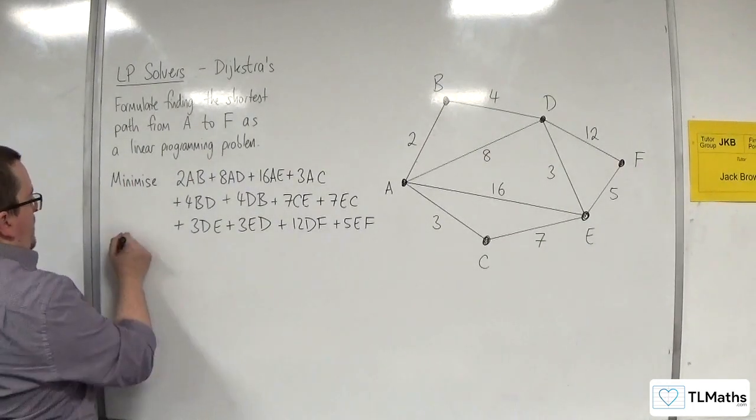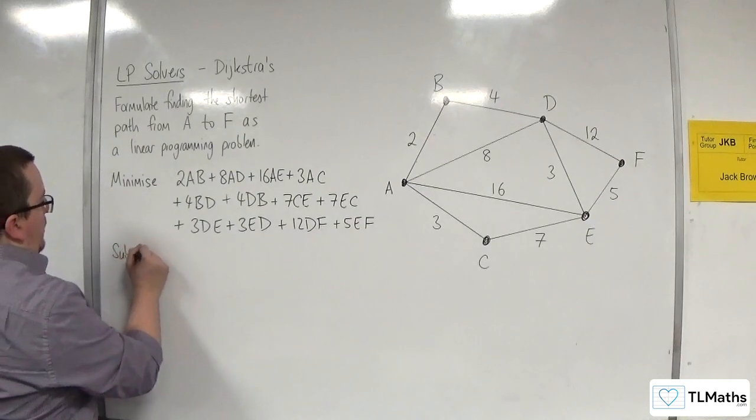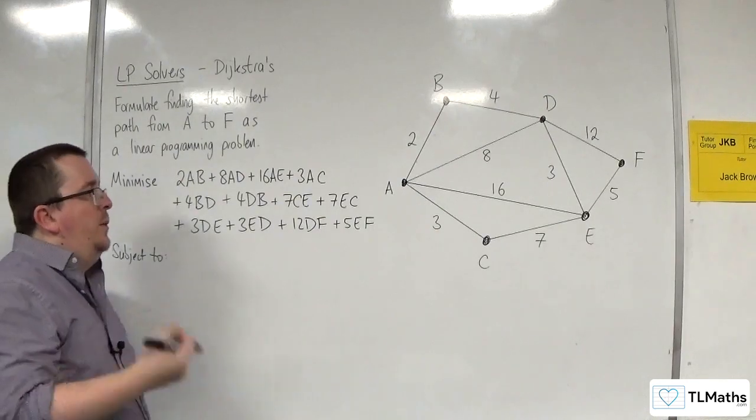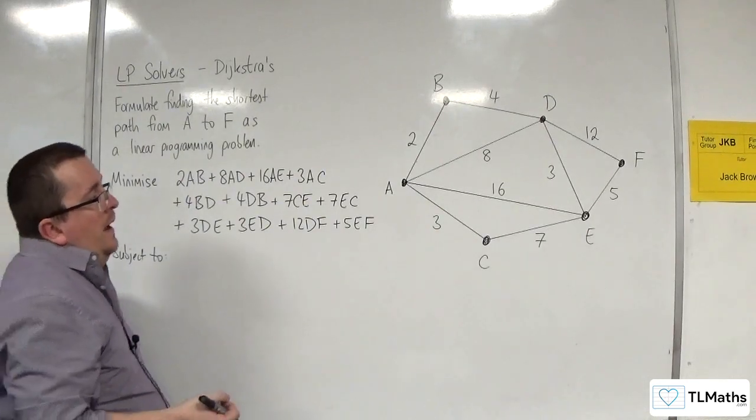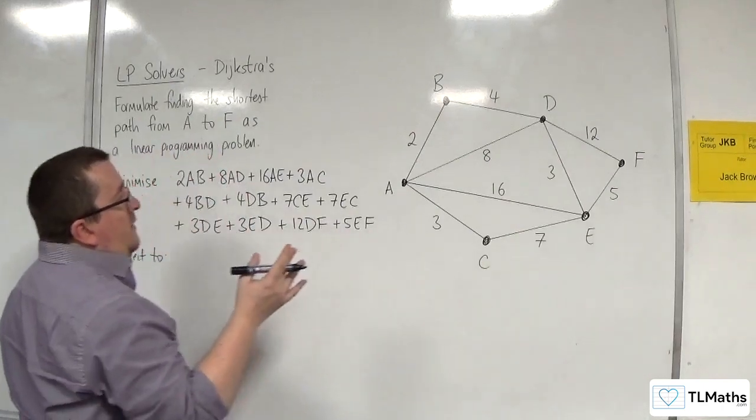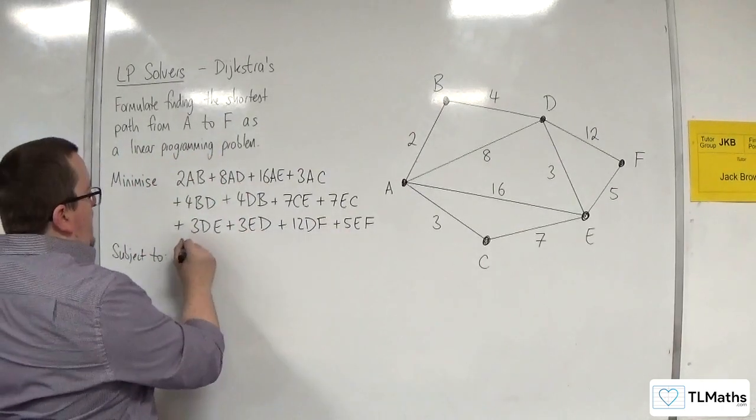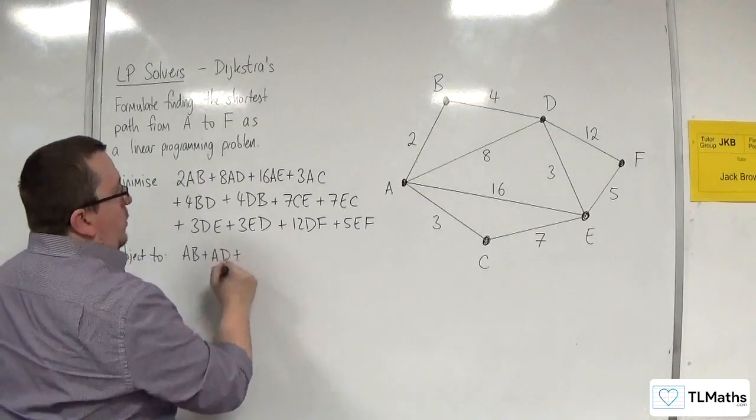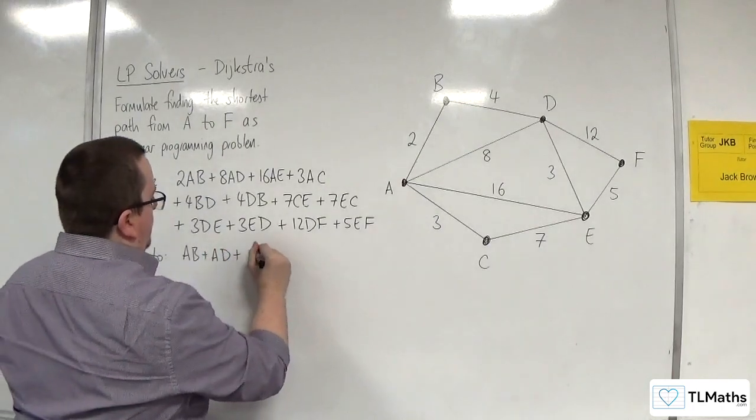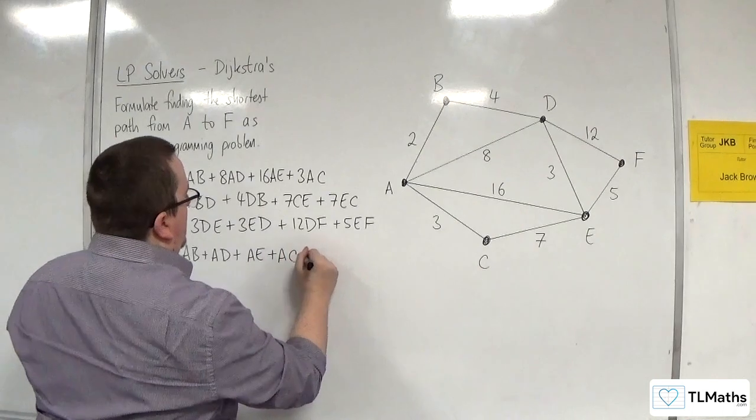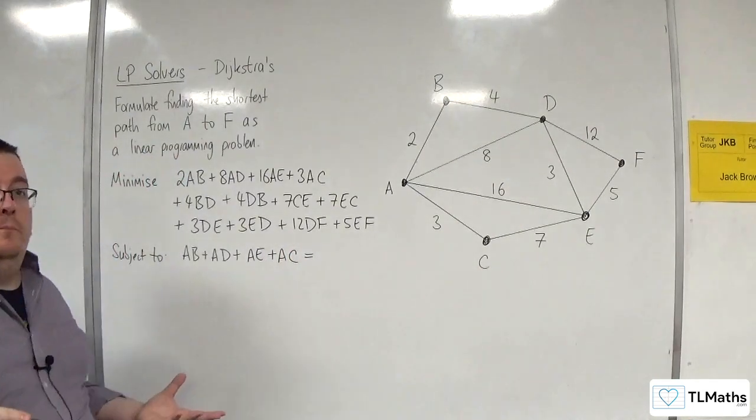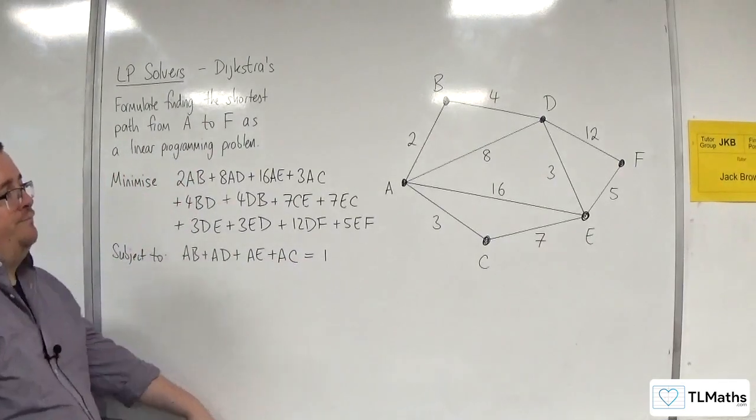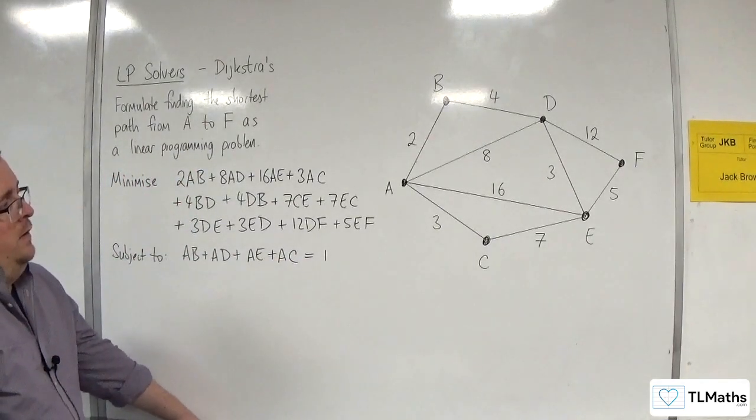Then, subject to, we want constraints for each of my vertices. So let's go with A first. So routes out of A are AB or AD or AE or AC, and I'm only going to pick one of them, and the rest will be zeros. So that's going to be equal to 1.